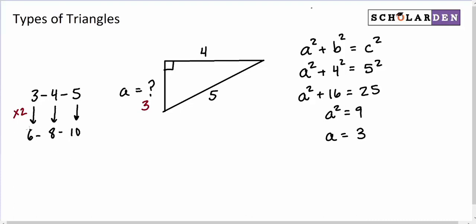So any multiple of these numbers, I could multiply by 8 if I wanted to, and get 24, 32, 40, will work out in the Pythagorean theorem. But 3, 4, 5 is like the basic Pythagorean triple.